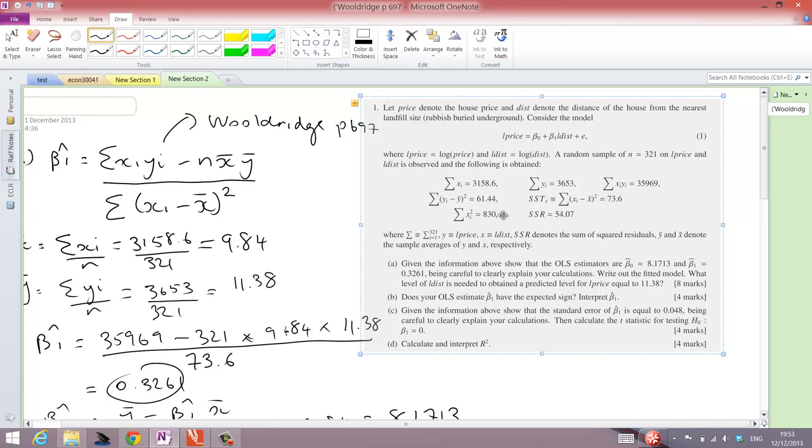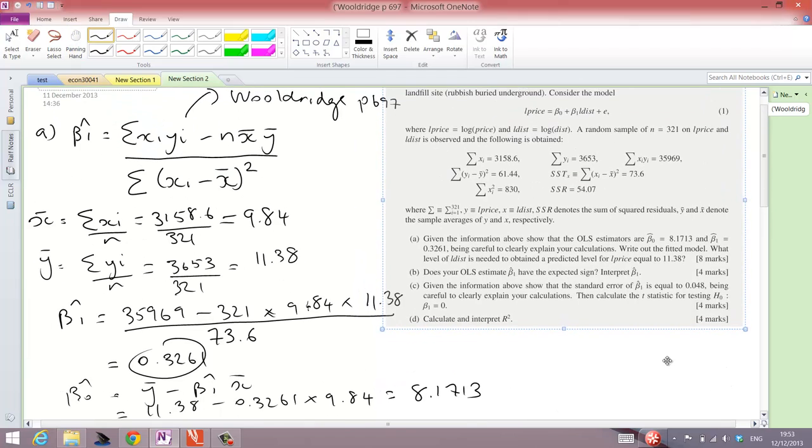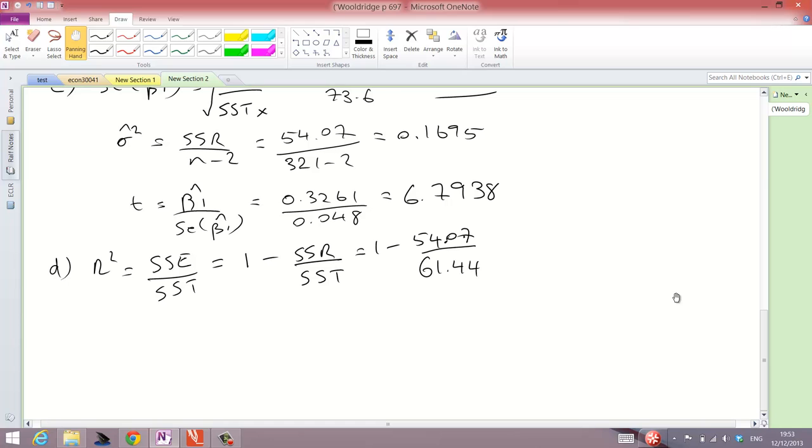Note that there's a difference. In my lectures, I didn't use this notation, SSTX, precisely for this reason, for the confusion of the total sum of squares. This term here, the sum of yi minus y bar squared, that is the total sum of squares, and that's what I talk about in my lectures. This other term, SSTX, is different. But we want the first term, the one for y, the total sum of squares. And we plug that in, and we get the answer.